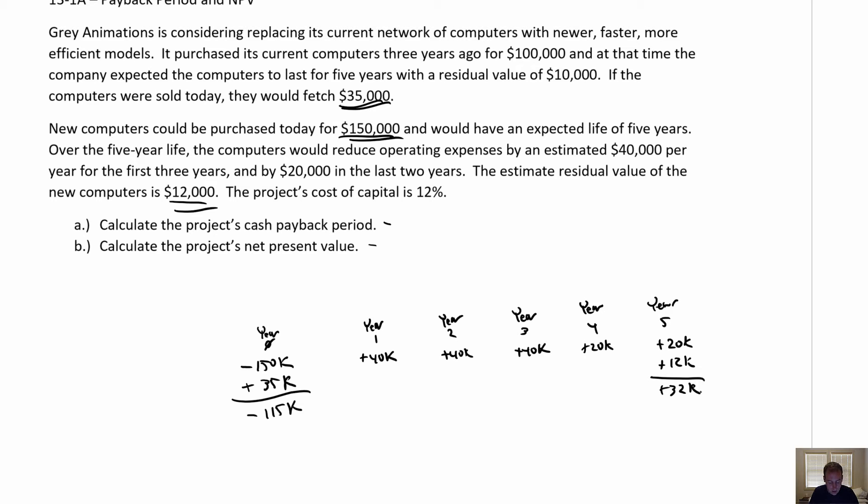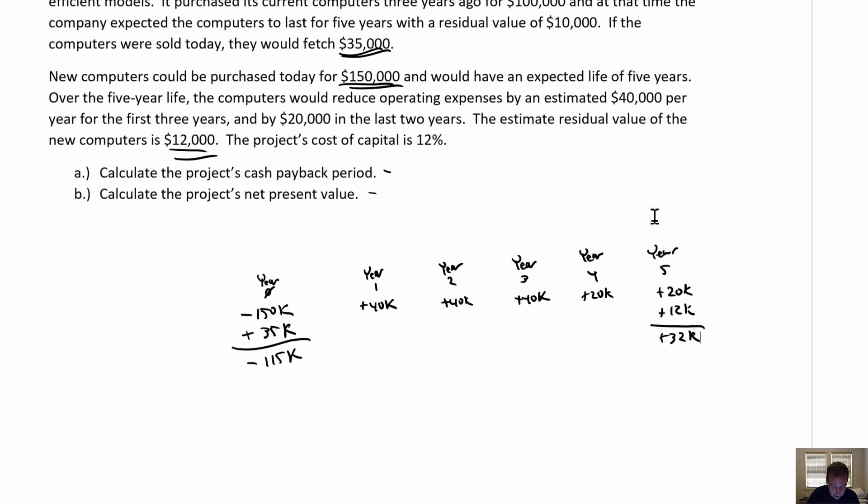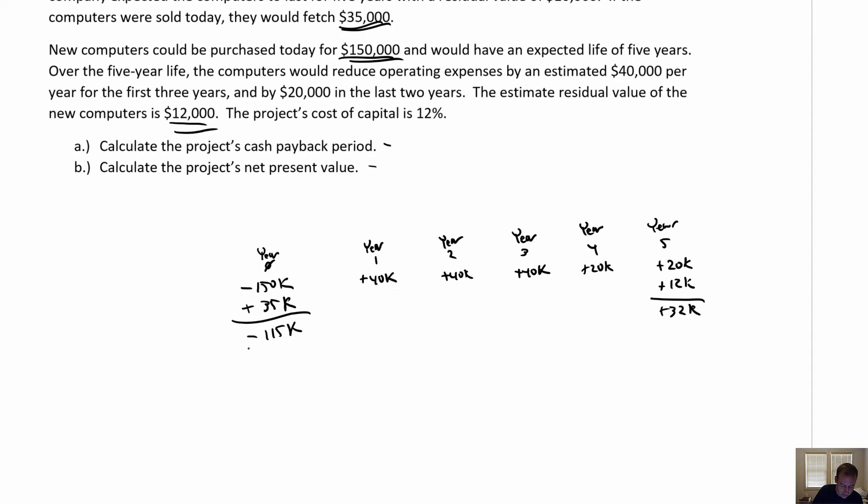So payback period is actually pretty simple. You just look at this number line and go, okay, when does this negative investment, and it's always going to be a negative investment, right? These investment decisions are like, should we spend our money on this? So it's always some spend at the start. So is this negative $115,000 outlay going to be worth it? And payback period says, when's it going to be paid off? So you just have to look at when does it go positive. So plus $40,000 there, that's not positive. Plus $40,000 there, that's not positive. Plus $40,000 there. Ah, there it's going to go positive. By the end of year three, we've covered this.